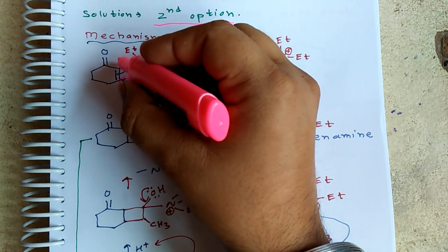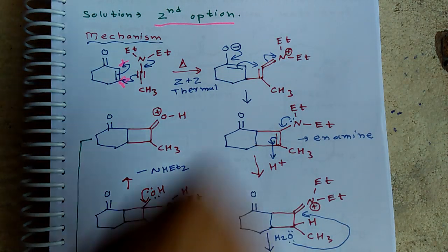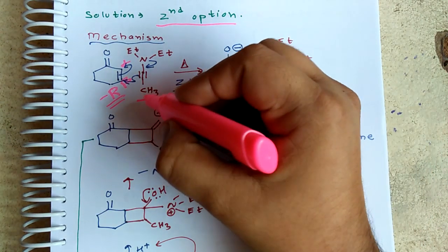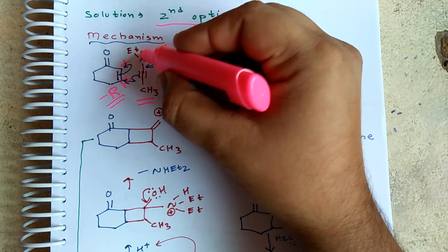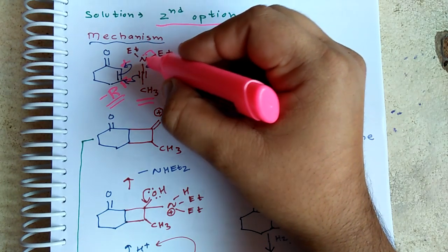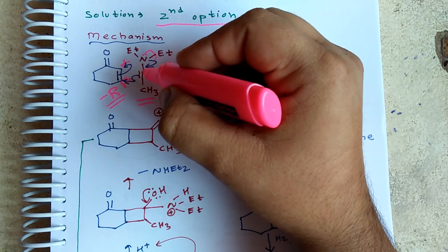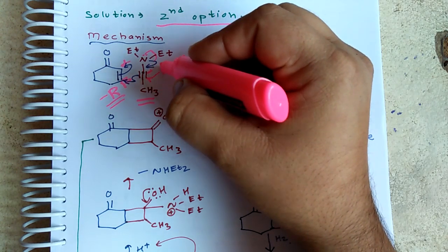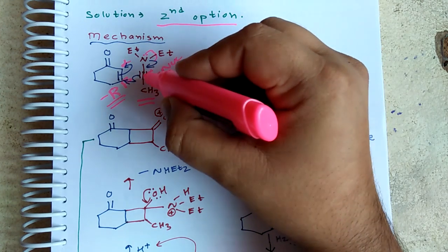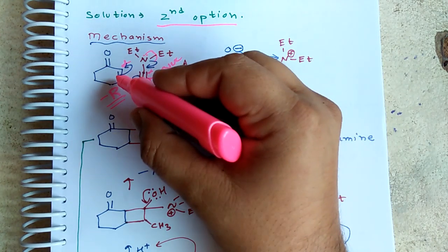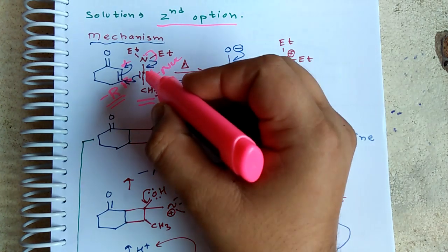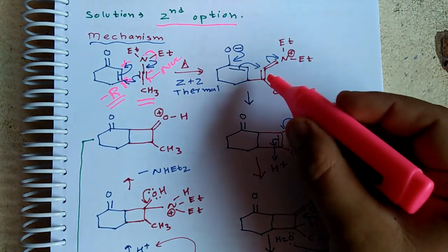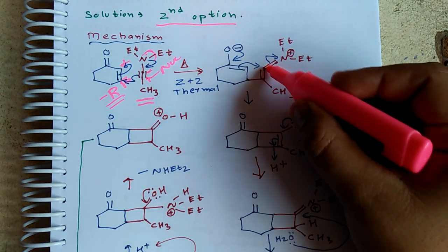The alpha position is nucleophilic due to the minus-R effect. When you look at this nitrogen moiety, the nitrogen has a lone pair and will donate electrons. So the beta position here is nucleophilic. In the propyne case, the beta position is nucleophilic, and in the enone case, the beta position is electrophilic. This will donate electrons and attack here.